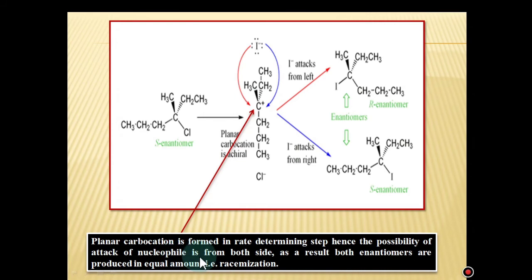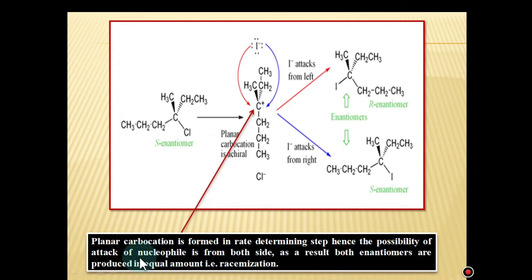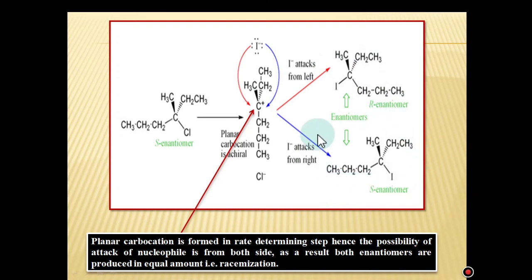The nucleophile, iodide ion, may attack on the front side as well as the back side of the molecule. As a result, both enantiomers are produced in equal amounts — that is racemization. Iodide ion attack from either side gives the possibility of forming the R enantiomer as well as the S enantiomer in equal amounts, hence racemization takes place.